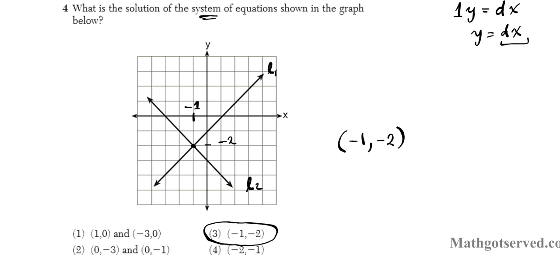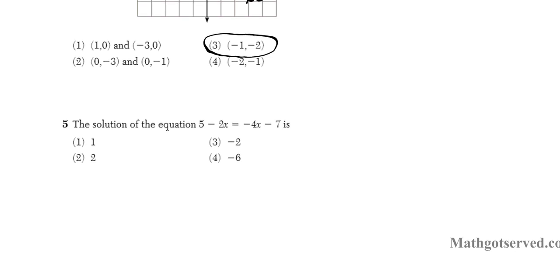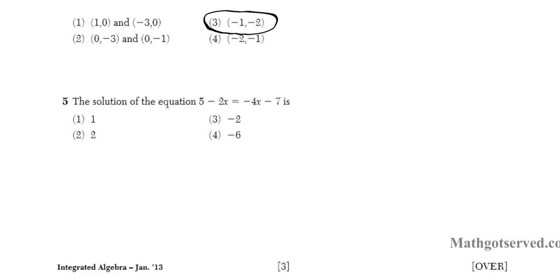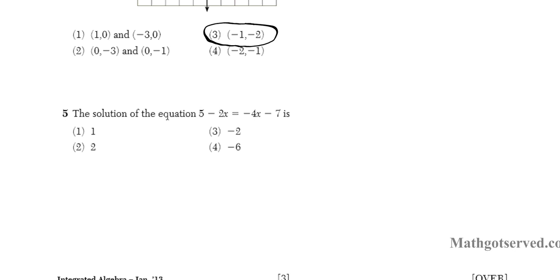So there you have it. Alright, let's take a look at the next problem. Question five says the solution to the equation 5 minus 2x equals negative 4x minus 7 is. Now this is an equation where we're solving an equation with variables on both sides. The goal is to isolate the variable and that will be the solution to your equation.